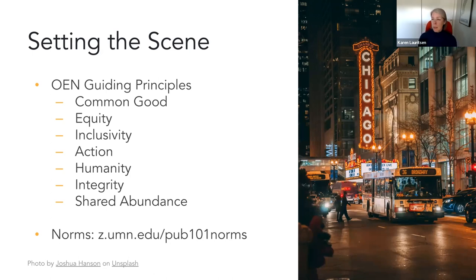This work can be very isolating, and many of you have a full plate of other responsibilities or might be the only person at your institution working in open education. Shared abundance is really critical to supporting the work that we do and continuing the incredible impact this community has achieved so far. If you'd like to read more about our norms, they're available at the link in the chat, which Amanda Larson — chair of the Pub 101 committee — will be dropping for you.